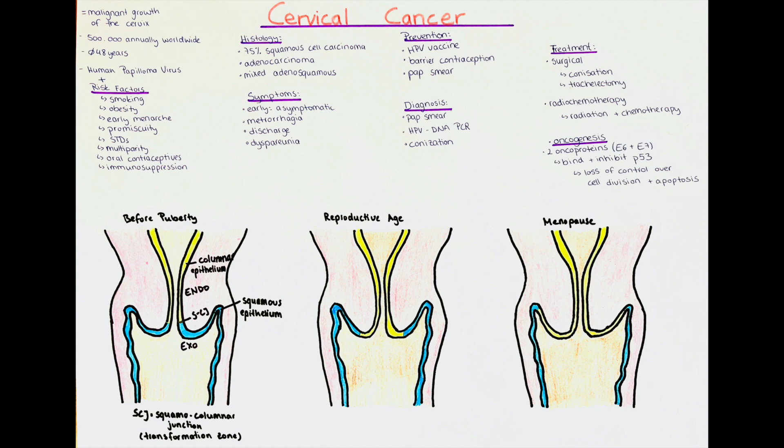In the next point, I want to talk about the clinical presentation, the diagnosis, and the treatment of cervical cancer. In early stages, cervical malignancies are usually asymptomatic. This emphasizes the importance of prophylactic annual check-ups with a speculum examination and pap smear, so that dysplasia or malignant transformations can be detected early.